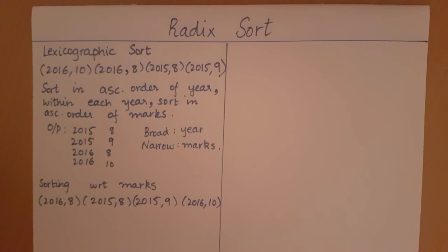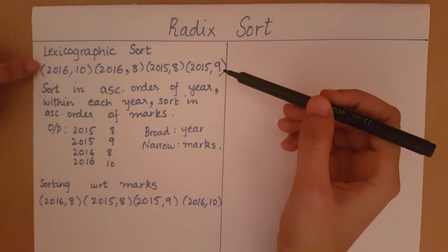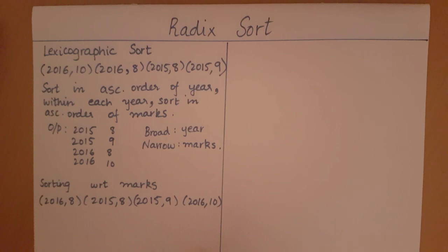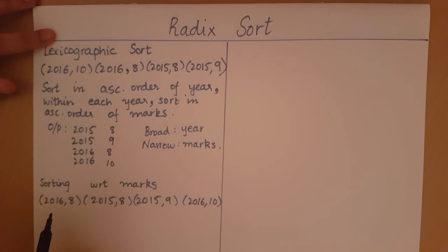It is important to note that the sorting applied here has to be a stable sort, which means that even though two tuples have the same key, the order in which they were present in the unsorted array is preserved in the sorted array. So (2016, 8) comes before (2015, 8) even though the key is equal — the original order is preserved.